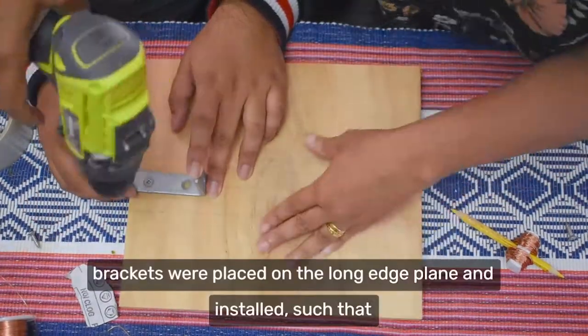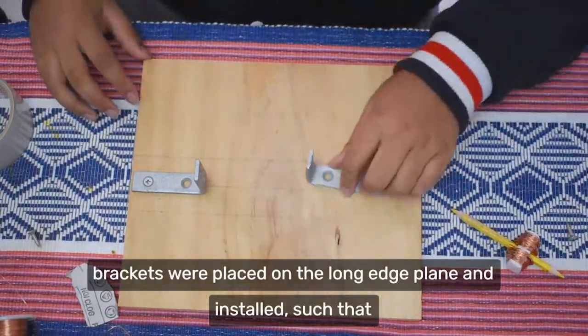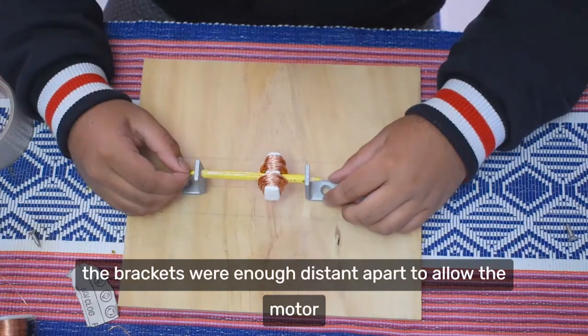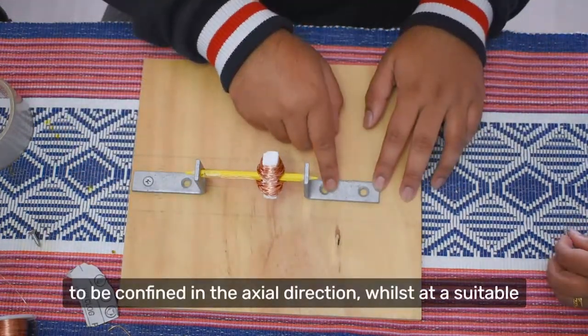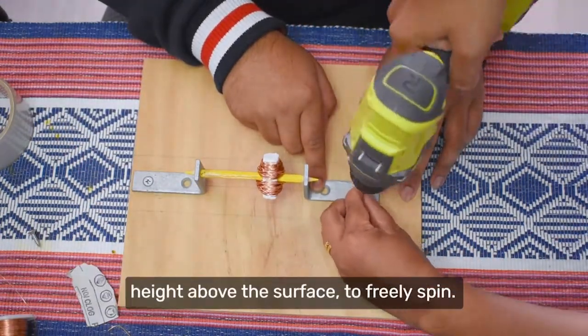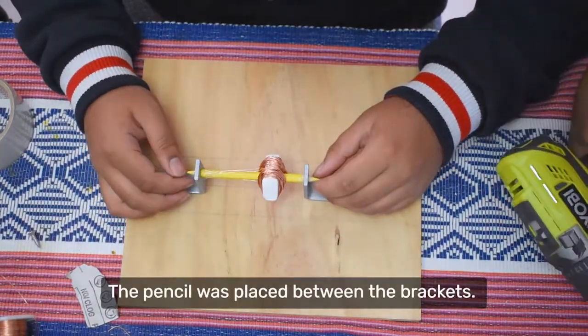5. One pair of angled brackets were placed on the long edge plane and installed such that the brackets were distant enough apart to allow the motor to be confined in the axial direction, whilst at a suitable height above the surface to freely spin. The pencil was placed between the brackets.